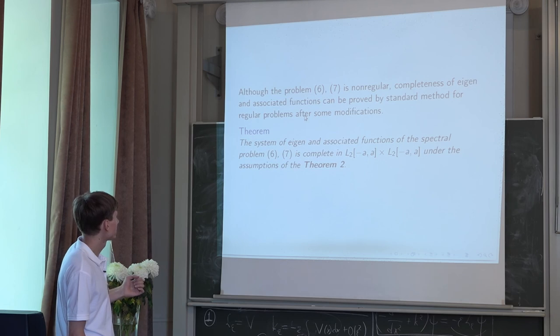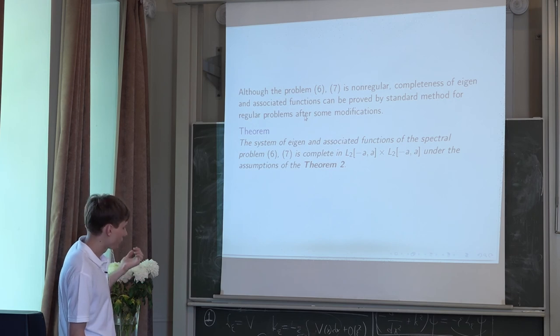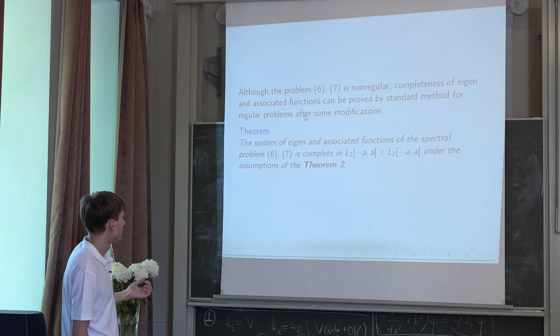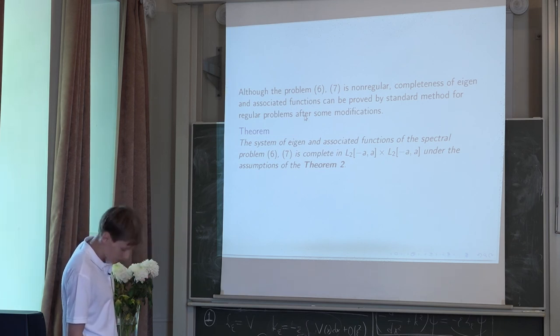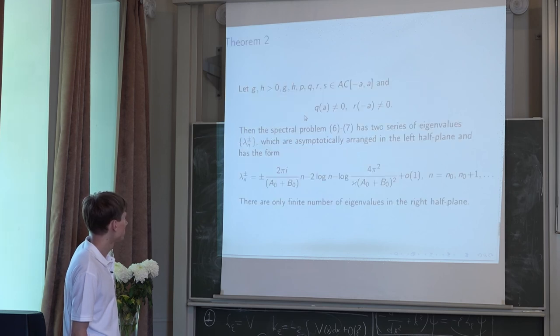Completeness of eigen and associated functions can be proved by standard method for regular problems after some modification. And so we have completeness of eigen and associated functions of the spectral problem six, seven in this space and the assumptions of theorem two and the assumption of this theorem.